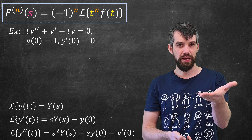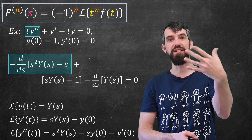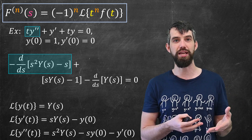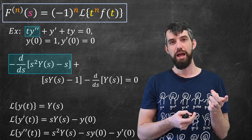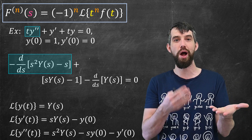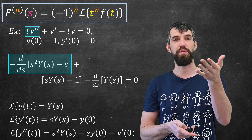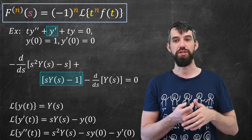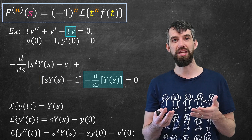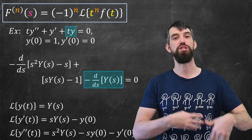Plugging that into my formula gives a long expression. I'll focus first on the t·y'' term. The multiplication by t at the front, when we take the Laplace transform, results in a negative derivative according to my formula. Then y'' is plugged in, substituting y(0) = 1 and y'(0) = 0, giving the negative derivative with respect to s of (s²·Y(s) − s). For the y' term, I plug in s·Y(s) − y(0) = s·Y(s) − 1. Finally, the t·y term gives another negative derivative applied to capital Y(s).